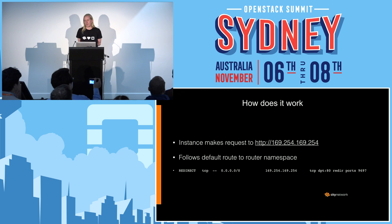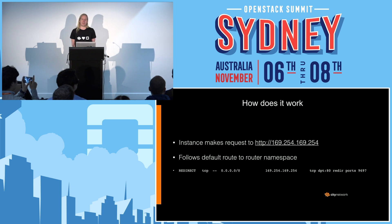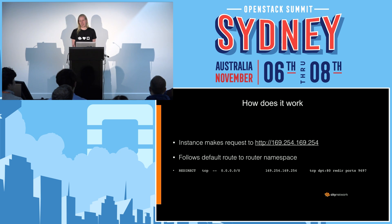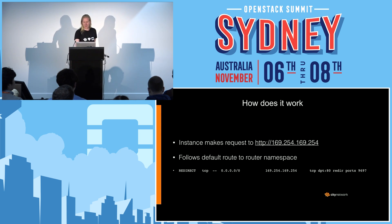So, how does it work? As I mentioned, a process in the instance will make a request to 169.254.169.254 — and that is generally the Cloud Init process that does this. This will follow the default route for the machine and end up in the router namespace, which then has an IP tables redirect rule that will redirect the request to port 9697, still inside the namespace.